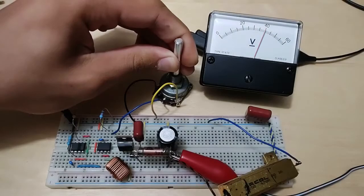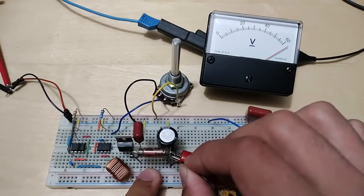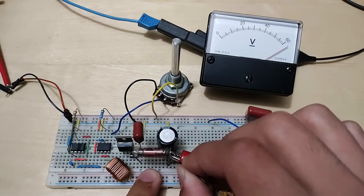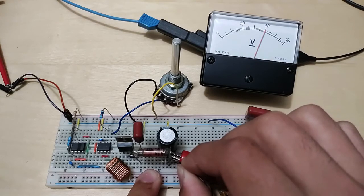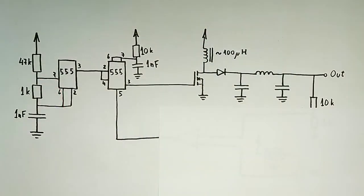This is the actual boost converter without regulation. If we attach a load, for example, on the output, you can see that the voltage drops, and that's because it's not regulated. The next thing we have to do is create a feedback circuit to be able to regulate the output.